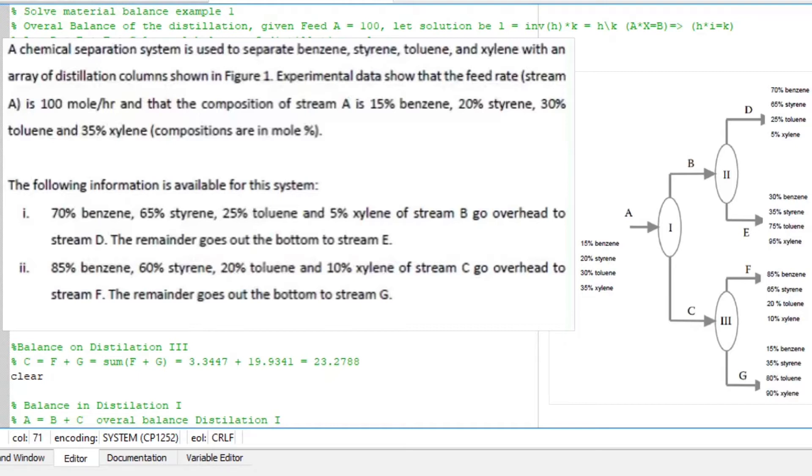Experimental data shows the feed rate of stream A is 100 mole per hour and the composition of A is 15% benzene, 20% styrene, 30% toluene, and 35% xylene.